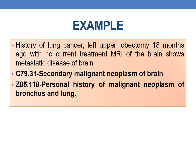Example: History of lung cancer, left upper lobectomy 18 months ago with no current treatment. MRI of the brain shows metastatic disease of brain. Previously the patient had lung cancer and is not taking any treatment for that, but the MRI shows metastatic neoplasm of brain. So the PDX is C79.31, secondary malignant neoplasm of brain, followed by Z85.118, personal history of malignant neoplasm of bronchus or lung.